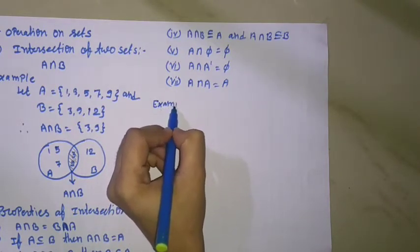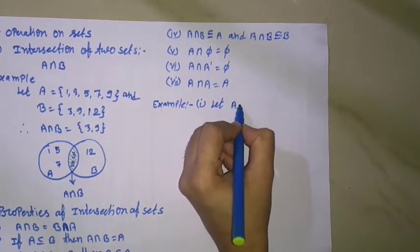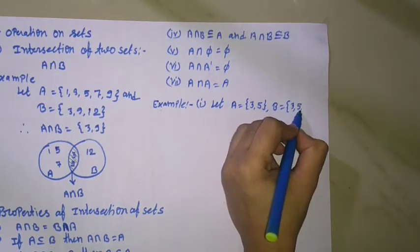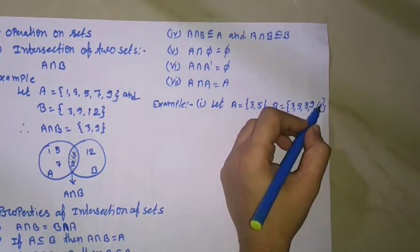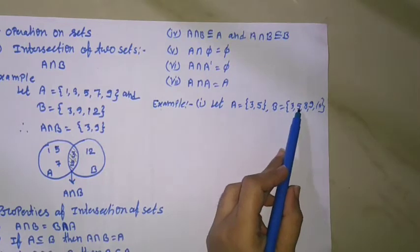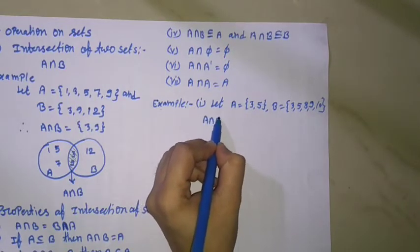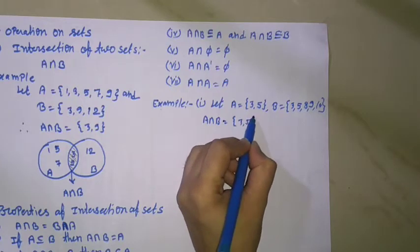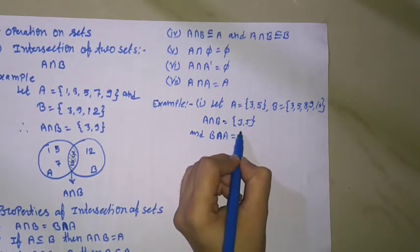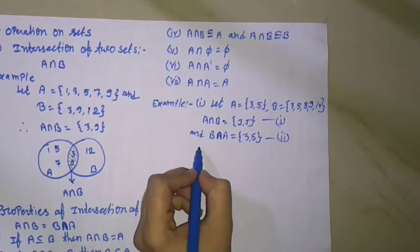Example of the first property. Let A equal to {3, 5} and B equal to {3, 5, 8, 9, 10}. Since 3 and 5 are common elements of set A and B, A intersection B equal to {3, 5} and B intersection A equal to {3, 5}. From equations 1 and 2, A intersection B equal to B intersection A equal to {3, 5}.